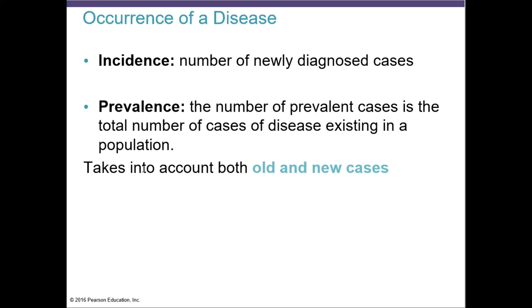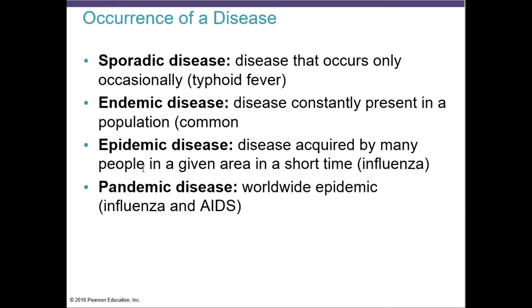Sporadic is a disease that occurs only occasionally. Endemic is a disease that is always present in a population — an example would be the common cold. Epidemic is a disease that is acquired by many people in a specific area in a short period of time. An example is influenza.